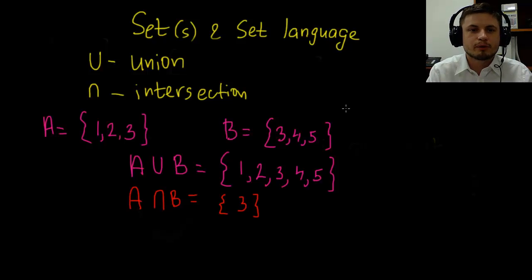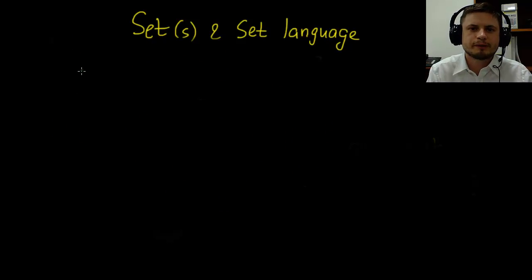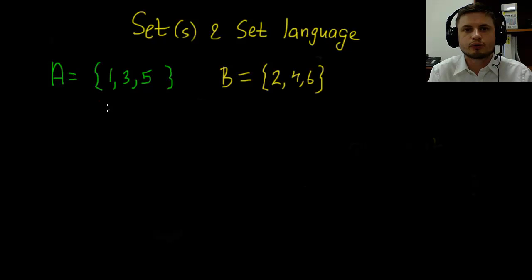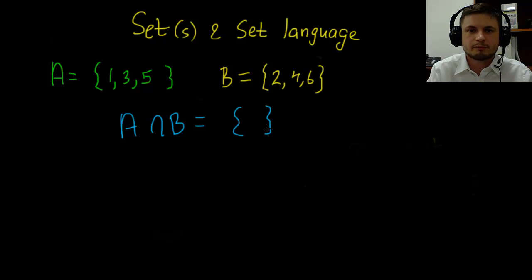To help you remember these symbols, think of union as a smiley face—happiness, together. Intersection is a sad face, like a negative or minus. Sometimes the intersection will give you an empty set. For example, here are two sets, one with odd numbers and one with even numbers. If we find the intersection, we get nothing. They don't have any common numbers. We call that an empty set, portrayed with empty brackets or this symbol: a zero with a stick going diagonally across it.